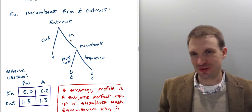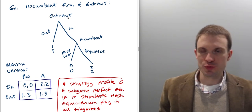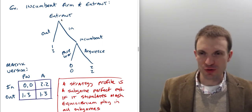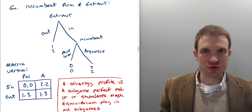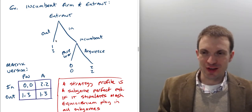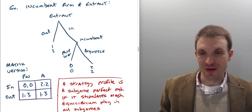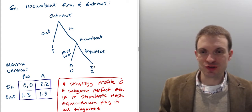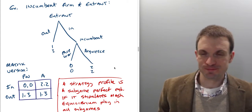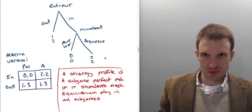The way we introduce the chain store paradox and sub-game perfect equilibrium is typically the incumbent-and-entrant structure. Suppose we have an entrant deciding whether to stay out or come in, and an incumbent deciding whether to acquiesce or engage in a price war. If the entrant stays out, they retain a profit of one and the incumbent gets three. If they come in and the incumbent engages in a price war, both get zero. If the incumbent acquiesces, they each split the market and get two each.